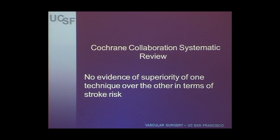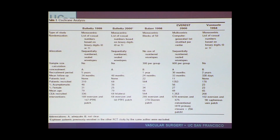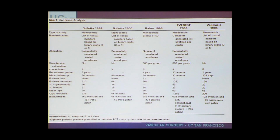A systematic review of five randomized trials did not demonstrate any evidence of superiority of one technique over the other. These five trials were all randomized; the only one that included both primary closure and patch was the Everest trial. The rest compared standard endarterectomy with patch to eversion endarterectomy. Again, no difference in outcomes, no difference in stroke rate, and no real statistical difference between either procedure.